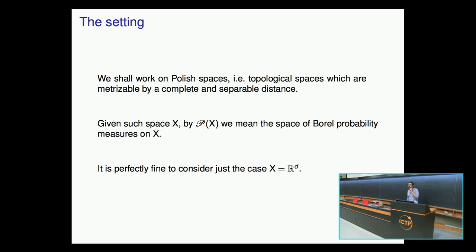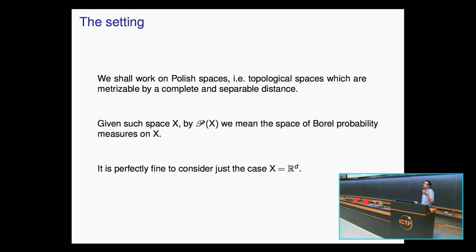We shall work on Polish spaces. A Polish space is a topological space whose topology is induced by some metric which is complete and separable. You say 'Polish space' instead of 'complete separable metric space' because you typically don't care about who the metric is, just the topology it induces. This is a natural setting for measure theory — it works particularly well on these spaces, much as it does on R^D. You can also just pick X to be R^D if you prefer.